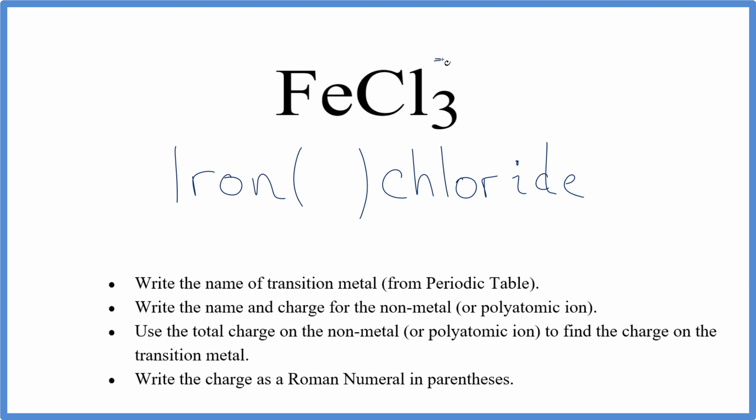We know that chlorine is a minus one, it's always minus one, and we have three chlorine atoms. So three times minus one, that's minus three. In order to balance this out, so the overall charge is zero, the net charge is zero, we need to have a plus three. That's the charge on iron.